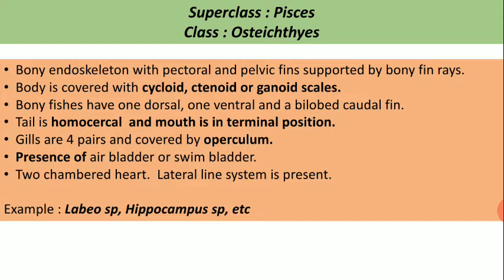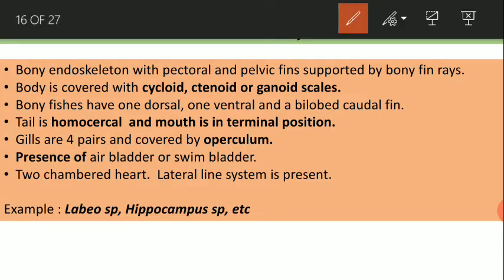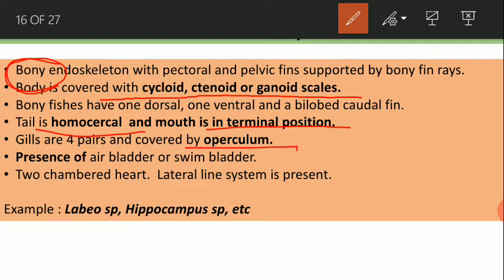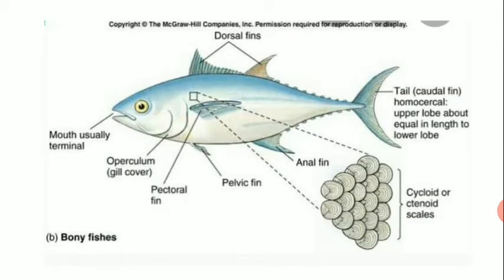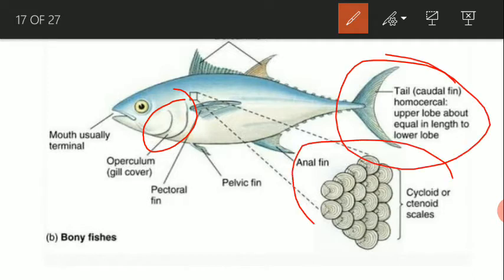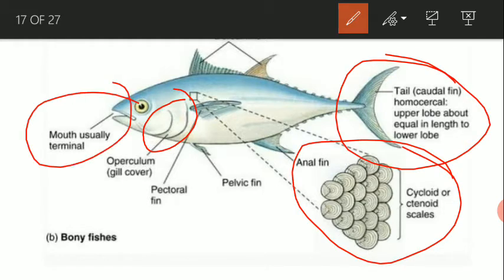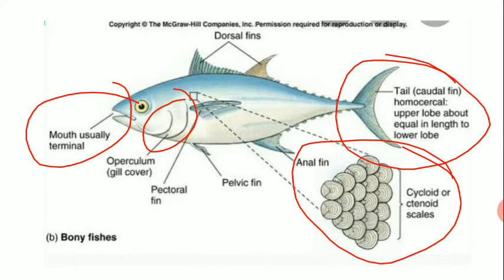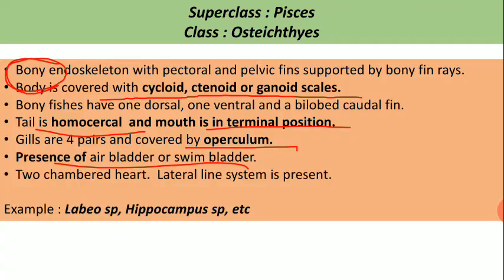Class Osteichthyes: their endoskeleton is bony and their body is covered with cycloid, ctenoid or ganoid scales. Their mouth is terminal in position and the tail is homocercal. There is presence of operculum and presence of air bladder. Examples are Labeo, Hippocampus, etc.